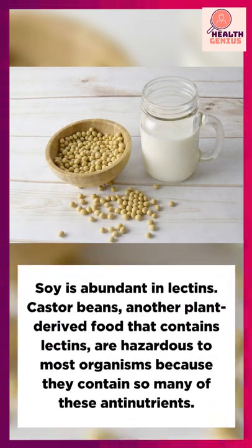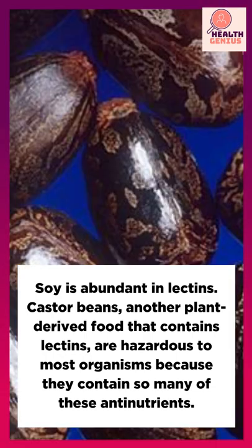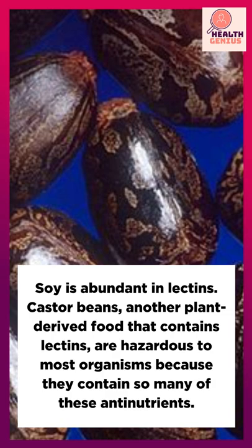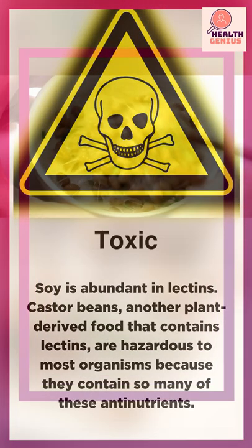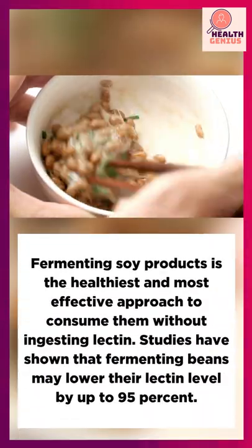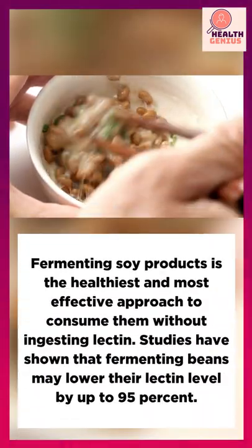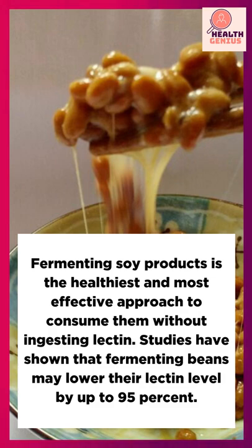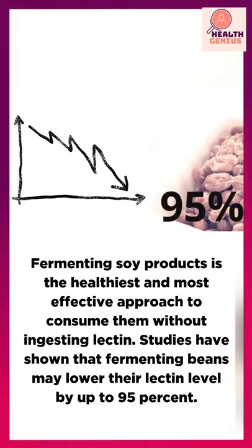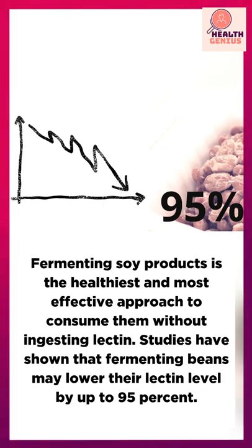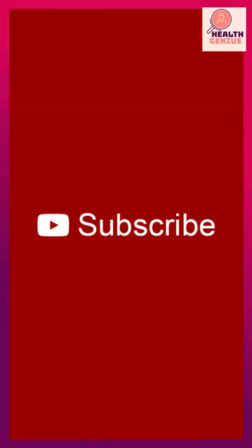Soy is abundant in lectins. Castor beans, another plant-derived food that contains lectins, are hazardous to most organisms because they contain so many of these anti-nutrients. Fermenting soy products is the healthiest and most effective approach to consume them without ingesting lectin. Studies have shown that fermenting beans may lower their lectin level by up to 95%.